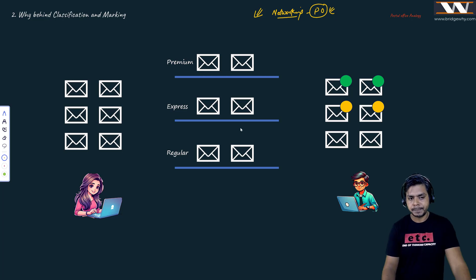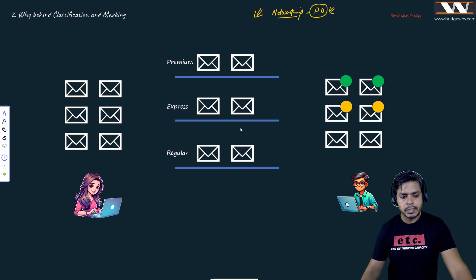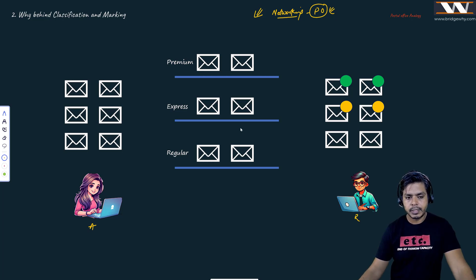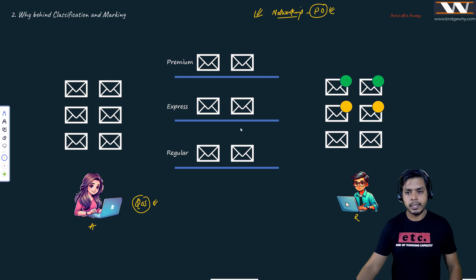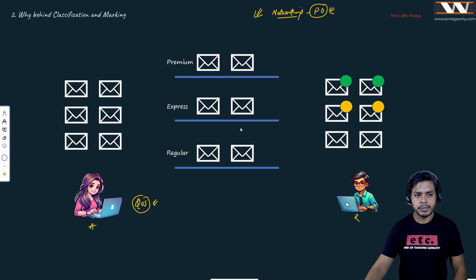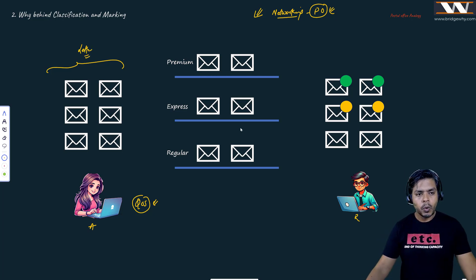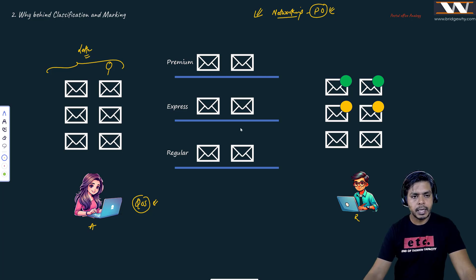So suppose Anjali and Rahul are here, and the boss has told them they need to implement Quality of Service in the network. Rahul and Anjali are discussing QoS, and the first concept they encounter is classification and marking. Rahul doesn't get it, so Anjali takes the example of a postal office service — they have many letters, which are normal letters.